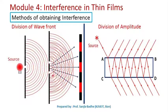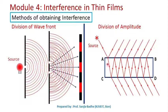This is what is done in Young's Double Slit Experiment. In the division of amplitude method, a thin film is used to divide a single ray of light into a number of light rays — a single wave is divided into multiple waves with the help of a thin film.